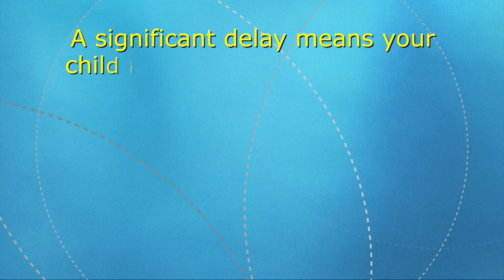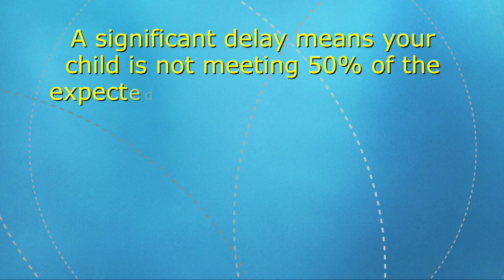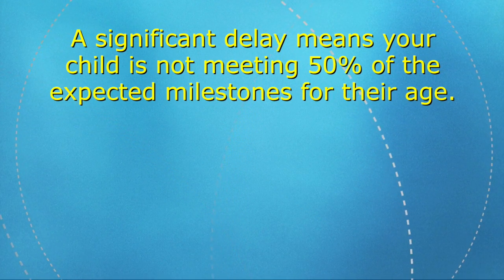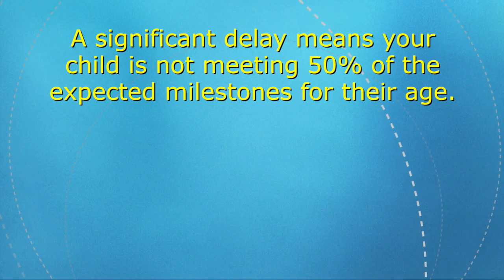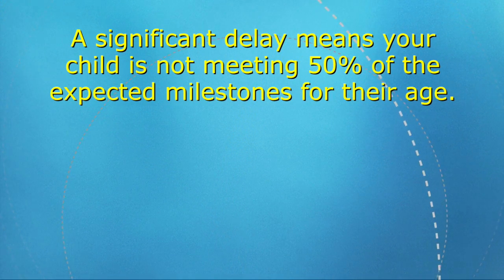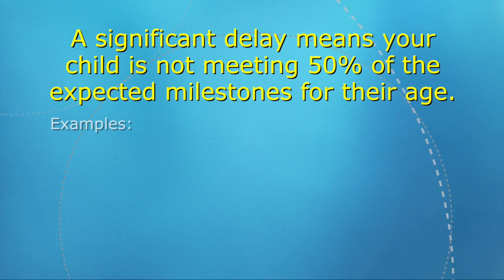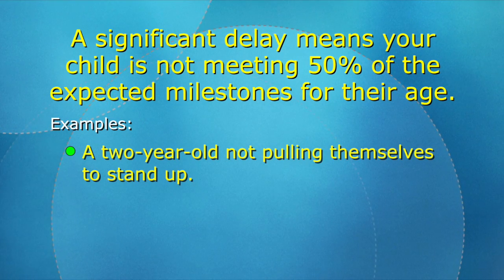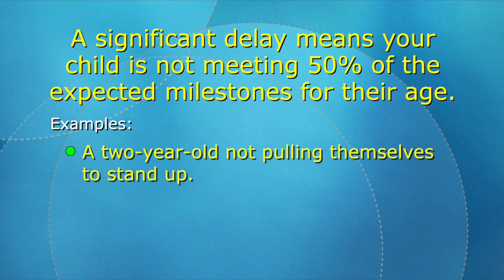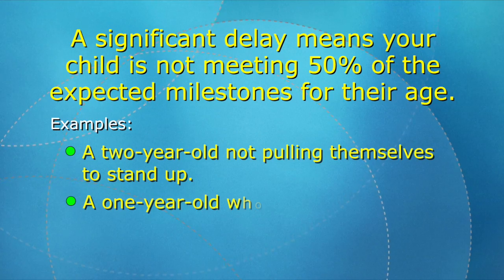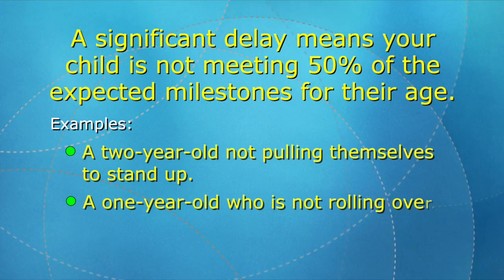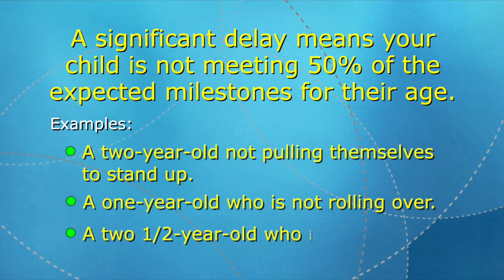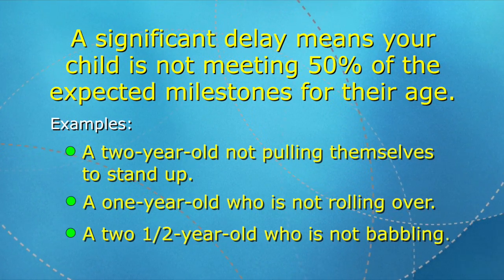A significant delay means that your child is not meeting 50% of the expected milestones for a child of their age. For example, a two-year-old who is not beginning to pull to stand up, a one-year-old who is not rolling over, or a two-and-a-half-year-old who isn't babbling.